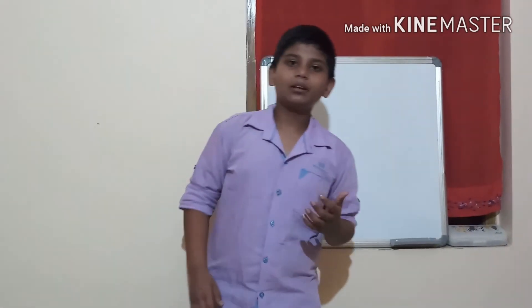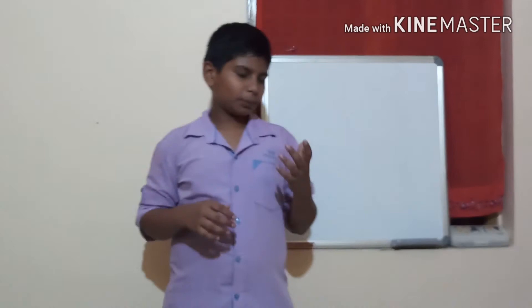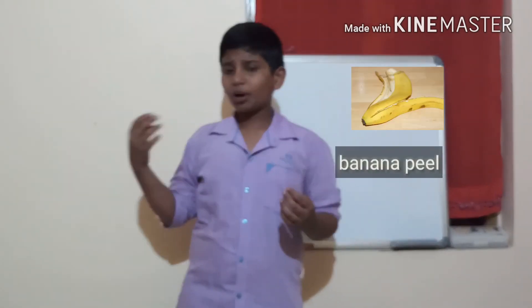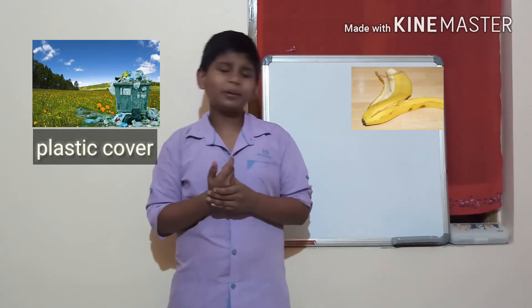What is that experiment? Take one onion peel or banana peel, and also take one plastic cover or polythene cover. There are many types of plastics — mainly two types: thermoplastic and thermosetting plastic.